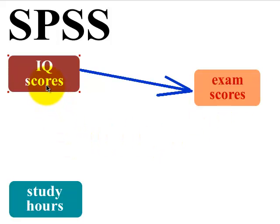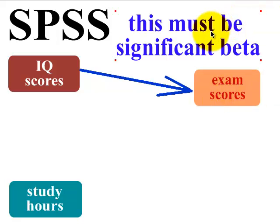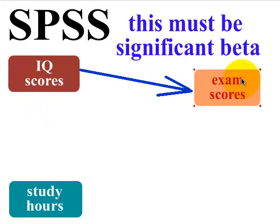In order for us to have a mediator, the correlation between the first predictor and the DV has to be significant. So the first thing you do is run a multiple regression model with just one IV and one DV — that's called a simple regression. We're going to go ahead and do that now.